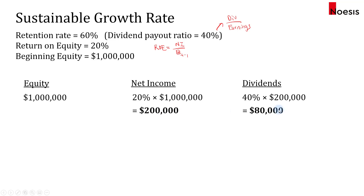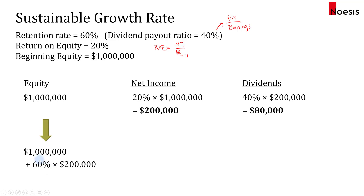Out of $200,000, $80,000 will be paid out as dividends, so the company will reinvest $120,000. That amount is added back to equity. At the end of the year, equity will be $1.12 million. From $1 million to $1.12 million, that shows a growth of 12%.